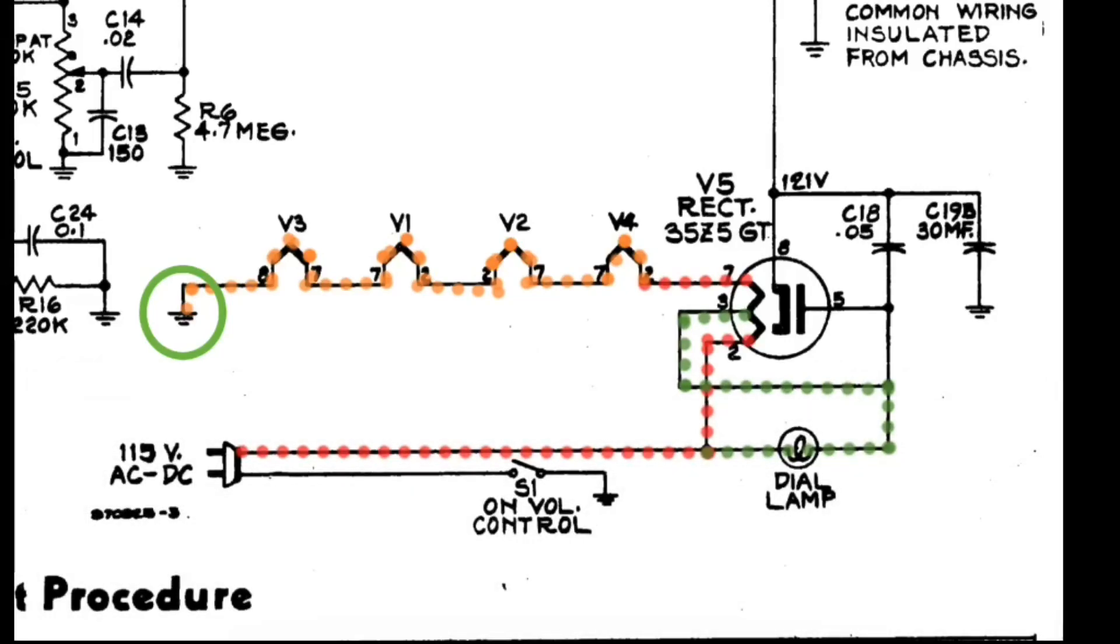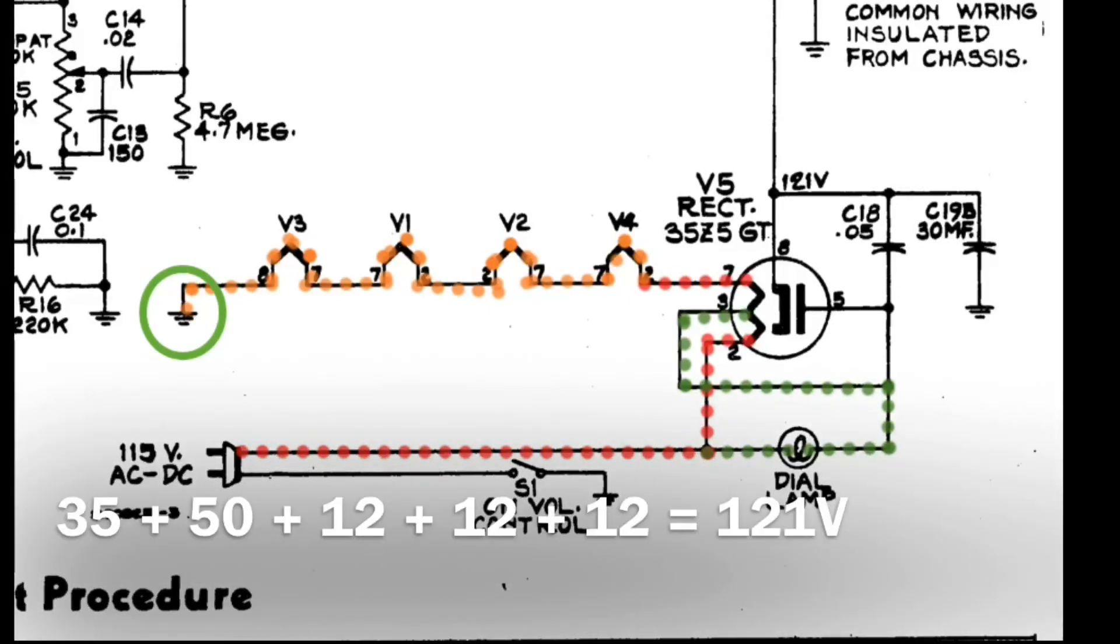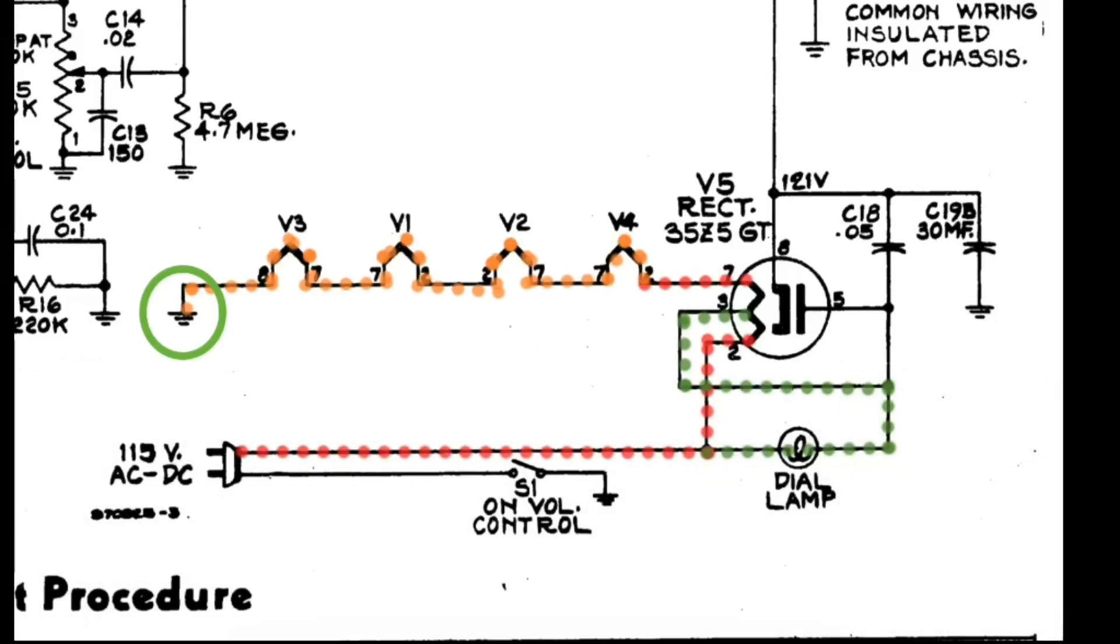Regarding the filament voltages here, if you look at V5, the rectifier is stated 35Z5GT, 35 volts. And then you move over to V4 for the audio output tube at 50 volts, with the remaining tubes being 12 volts each. So if you look at the string of voltage, add those up, you end up with 121 volts. Of course, there's a little bit of voltage drop as well for that dial lamp that's tapped off of the rectifier tube. Back then, the radio was engineered to work on voltages between 105 volts and 125 volts. The idea should be to keep the filaments plus or minus 10 percent.